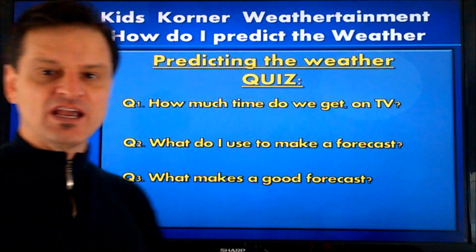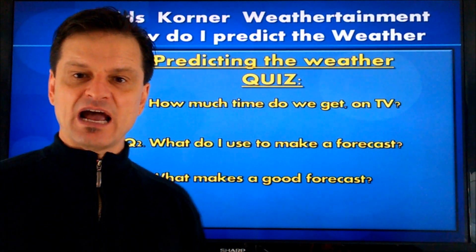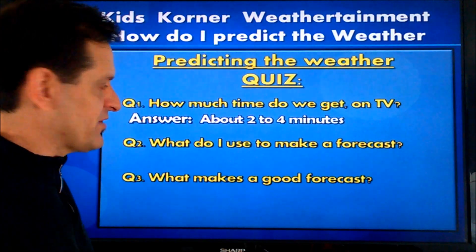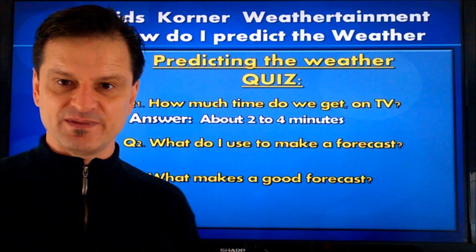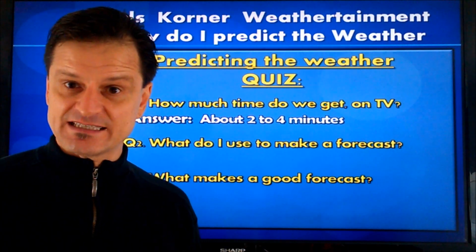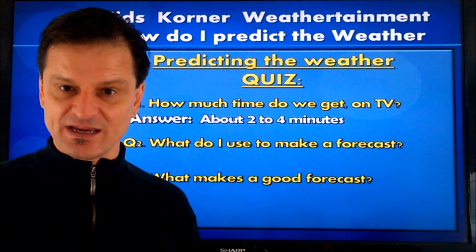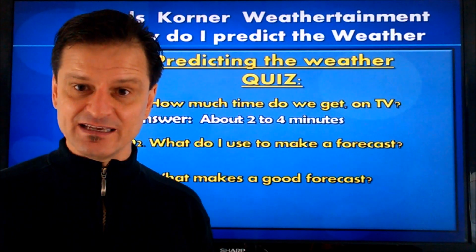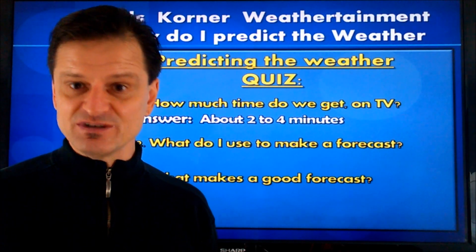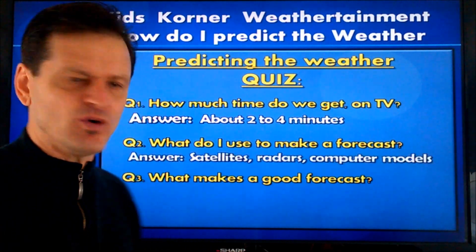Here we go. Question one: How much time do we get to present the weather on TV? About two to four minutes. It depends on what other news is going on that may be very important on a given newscast, but generally between two and four minutes.